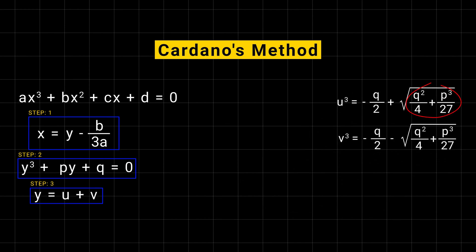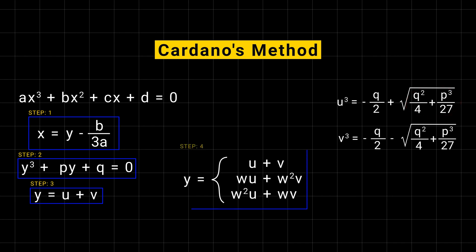If the discriminant is less than 0, then u cubed and v cubed are complex numbers. These are the solutions for this equation, where w is the cube root of unity. Now we can easily find the roots of any cubic equation.